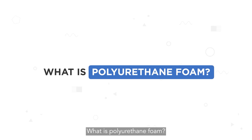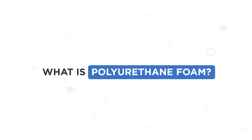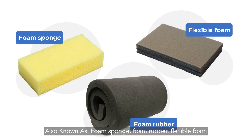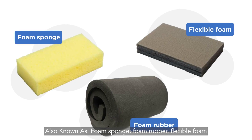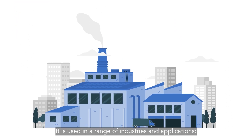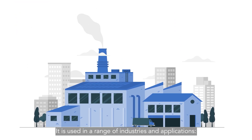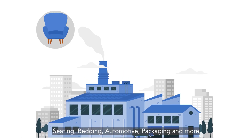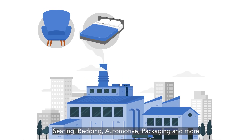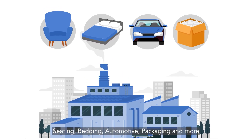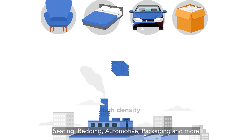What is polyurethane foam? Also known as foam sponge, foam rubber, or flexible foam. It is used in a range of industries and applications: seating, bedding, automotive, packaging, and more.